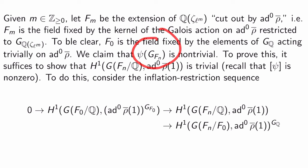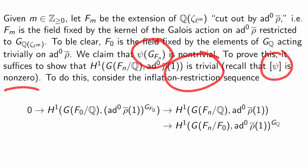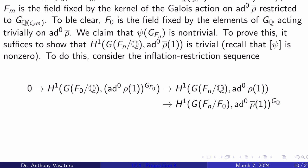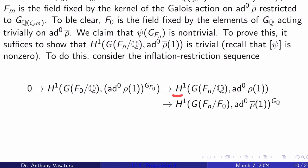The claim is that psi(Gal(F_N)) is non-trivial. To prove this, it suffices to show that H^1(Gal(F_N/Q), ad^0 rho-bar(1)) is trivial. The reason: we already know [psi] is non-zero overall, so if this cohomology group is trivial, psi of the Galois group must be non-trivial. We'll need an inflation-restriction sequence: 0 → H^1(Gal(F_0/Q), ad^0 rho-bar(1)^{Gal(F_0)}) → H^1(Gal(F_N/Q), ad^0 rho-bar(1)) → H^1(Gal(F_N/F_0), ad^0 rho-bar(1))^{G_Q}.